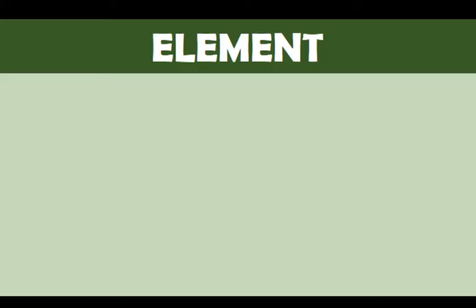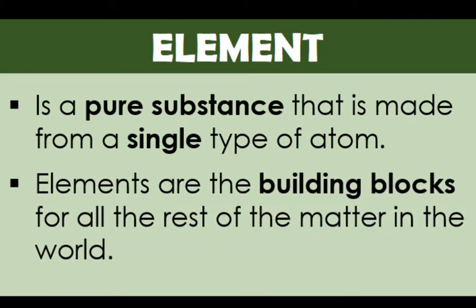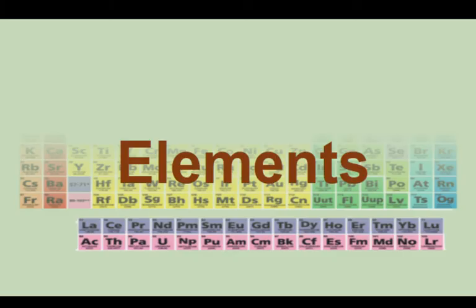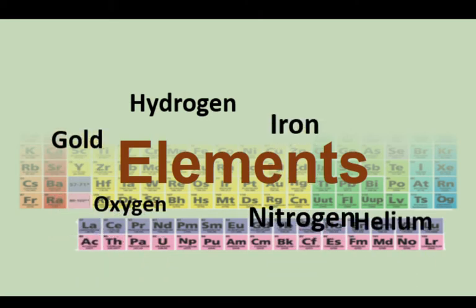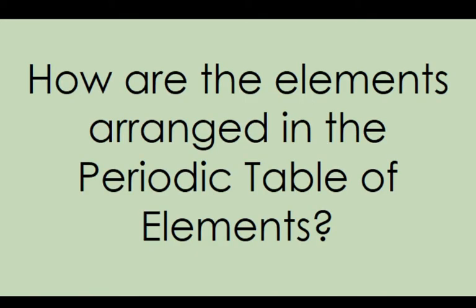The Periodic Table of Elements contains the arrangement of all the elements. First, let's define what an element is. An element is a pure substance made from a single type of atom. Elements are the building blocks for all the rest of the matter in the world. Examples of elements include hydrogen, oxygen, nitrogen, iron, gold, helium, and others. As of today, we have a total of 118 elements discovered. The essential question is: how are the elements arranged in the Periodic Table of Elements?